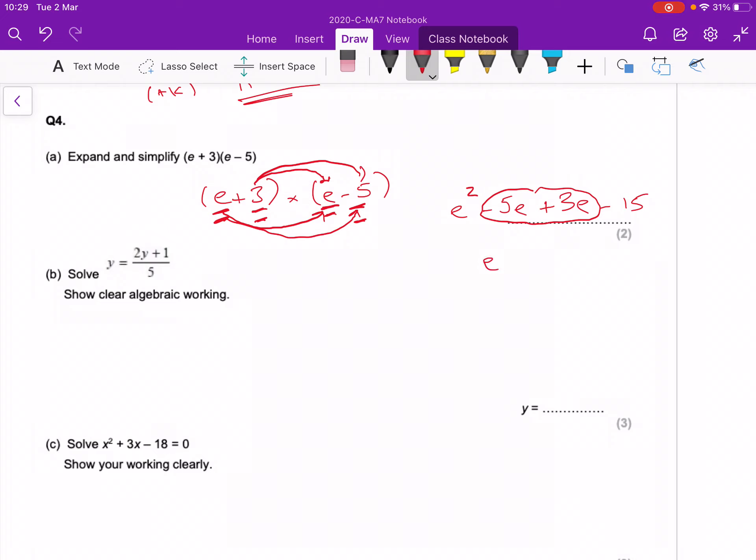Part b: y equals (2y + 1) over 5. I really want to get rid of this dividing by five on the right hand side first, so I times by five on the left hand side, I times by five on the right hand side with the equal sign in the middle. If you do that to the left, you'll end up with five times y on the left, and the dividing by five will cancel with the times by five, so you're left with 2y + 1.